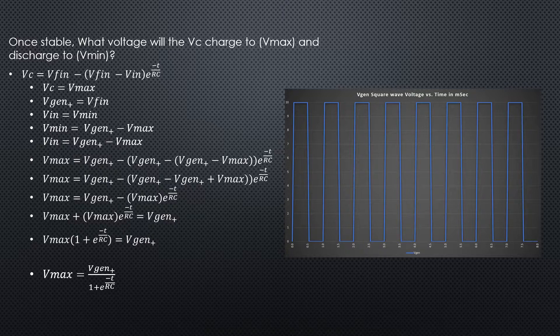Substituting V-min = V-gen minus V-max into the capacitor charge formula gives: Vmax = V-gen minus (V-gen minus (V-gen minus V-max)) times e to the negative time over RC. Distributing and simplifying yields: Vmax = V-gen minus V-max times e to the negative time over RC. Moving V-max terms to one side: Vmax plus Vmax times e to the negative t/RC equals V-gen. Factoring out Vmax: Vmax times (1 plus e to the negative t/RC) = V-gen. Therefore: Vmax = V-gen divided by (1 plus e to the negative time over RC).